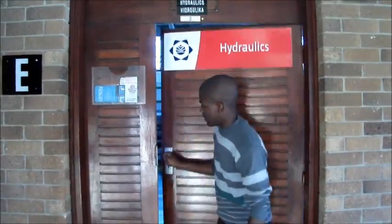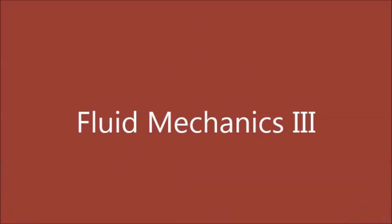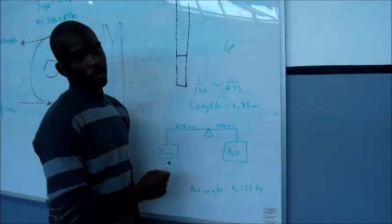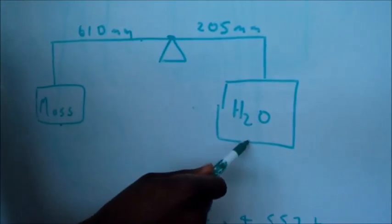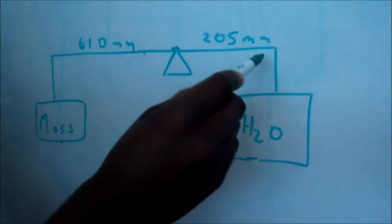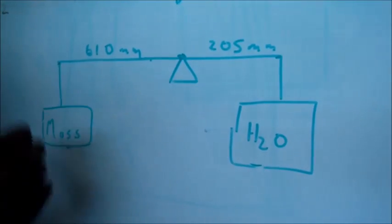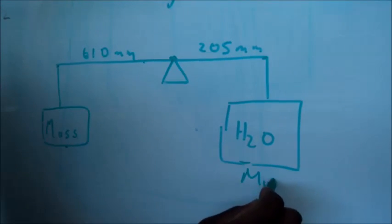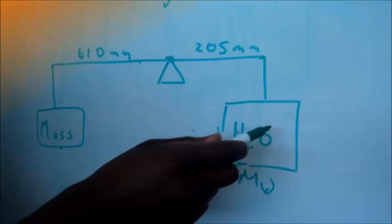We are doing mechanical engineering now. Here we have the weights we will be using, here we have our pivot point and here we have our water. These are the distances from the pivot point to the water, and this is from the pivot point to the mass. Now we need to find the mass of the water — we have to take moments about this pivot point to find that mass.